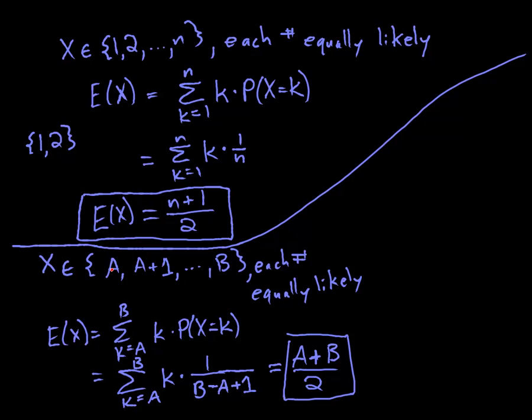You add them up and divide by how many there are. So if you take the average of the n points, the average of the smallest and largest values, that gives you this. Also, if you were to average together all the values, that would give you the A plus B over 2. So there is the expectation for discrete uniform distribution.